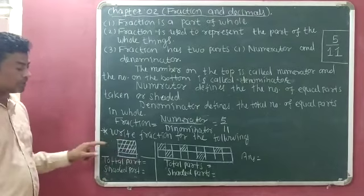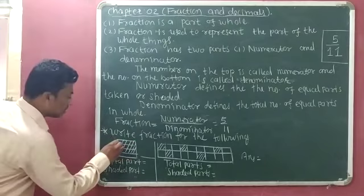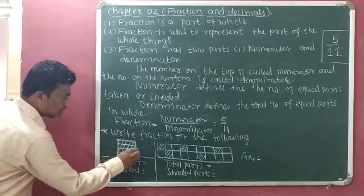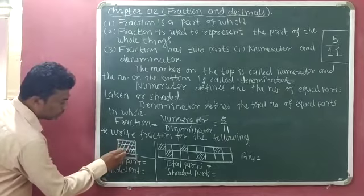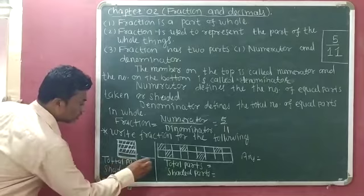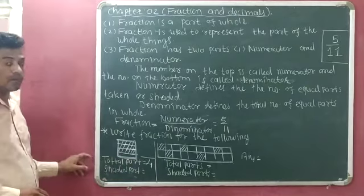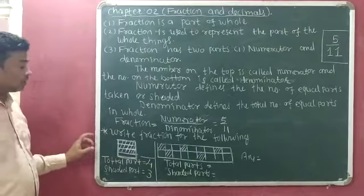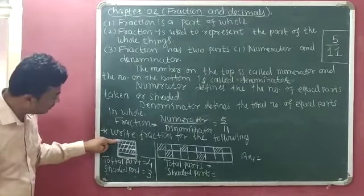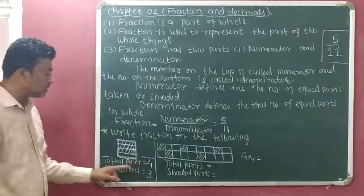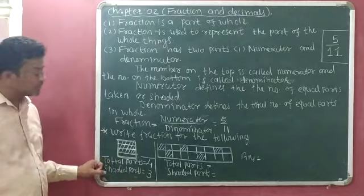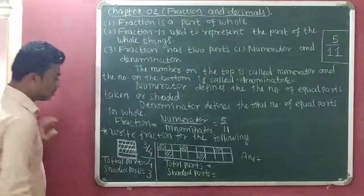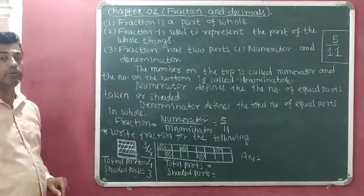For the first figure, there are four total parts — 1, 2, 3, 4. So total parts equals 4. Now for the shaded parts: 1, 2, 3 — so shaded parts are 3. Therefore the fraction is shaded parts divided by total parts, which is 3 by 4.